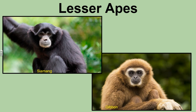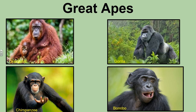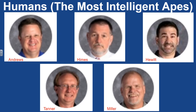Then we have the lesser apes, getting into the more complex primates — things like the Siamang and the Gibbon. And then the great apes, which would include the Orangutan, the Gorilla, the Bonobo, and the Chimpanzee, which is actually our closest relative with about 98.5% of the same DNA as humans. And then we have the humans — the most intelligent of the apes — like the Andrews, the Hines, the Hewitt, the Tanner, and the Miller.